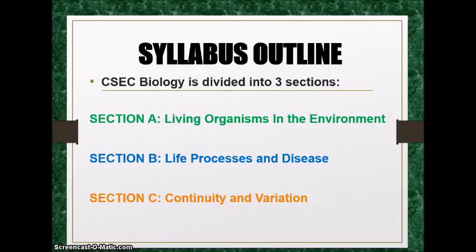CSET Biology is divided into three sections: Section A, Living Organisms in the Environment; Section B, Life Processes and Disease; and Section C, Continuity and Variation. I'm going to break down the topics that you need to know for each of these sections.